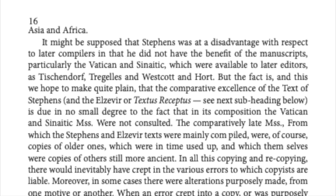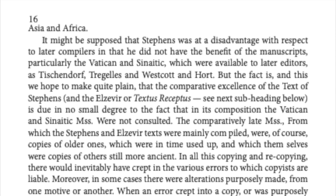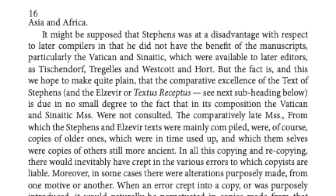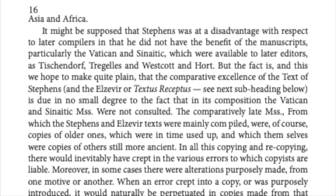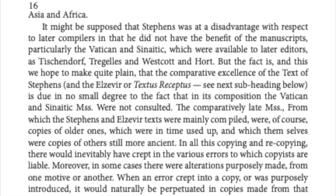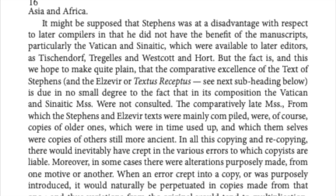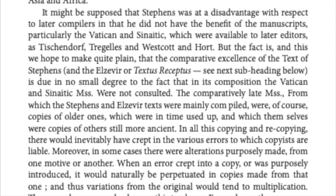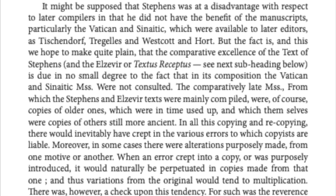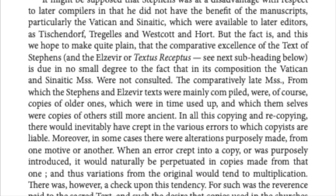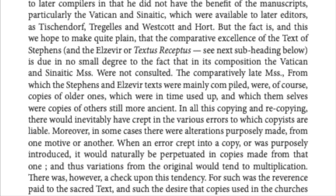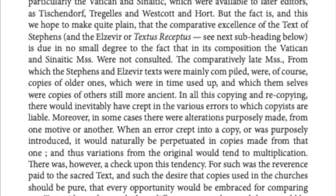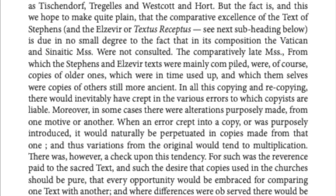It might be supposed that Stevens was at a disadvantage with respect to later compilers, in that he did not have the benefit of the manuscripts — particularly the Vatican and Sinaitic — which were available to later editors such as Tischendorf, Tregelles, and Westcott and Hort. But the fact is, and this we hope to make quite plain, that the comparative excellence of the texts of Stevens and the Elzevir or Textus Receptus is due in no small degree to the fact that in their composition the Vatican and Sinaitic manuscripts were not consulted. The comparatively late manuscripts from which those texts were mainly compiled were copies of older ones, which were in time used up, and which themselves were copies of others still more ancient.